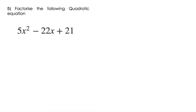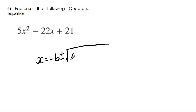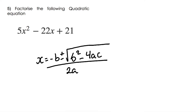Question 5: factorize 5x squared minus 22x plus 21. To answer this question we're going to be using the quadratic formula: x is equal to minus b plus or minus the square root of b squared minus 4ac, all over 2a. Our next step is to identify the terms a, b, and c. So a is 5, b is -22, and c is 21.